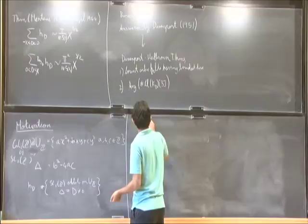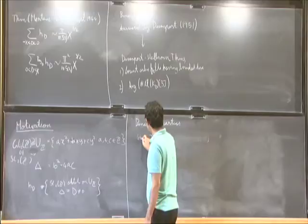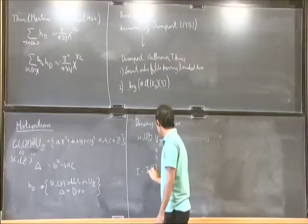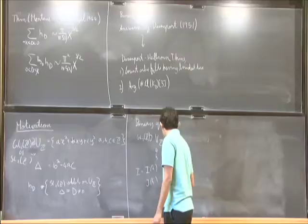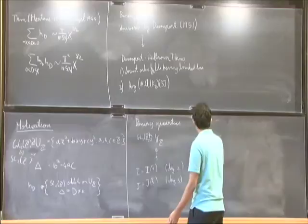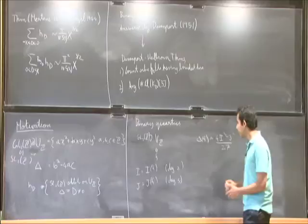We denote the space of integral binary quartic forms by V_Z and as before the group GL(2,Z) acts on it. Given a binary quartic form f we can attach two invariants to it: I(f) which is a degree 2 polynomial in the coefficients of f and J(f) which is a degree 3 polynomial in the coefficients of f. Over the complex numbers I and J generate the ring of invariants. The discriminant of f can be written as (4I³ - J²)/27.